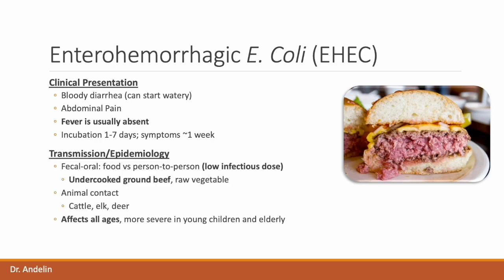It can be transmitted through the fecal-oral route, including through contaminated foods such as undercooked ground beef or raw vegetables. Just like Shigella, it has a low infectious dose, making it easy to spread from person to person. EHEC can also be spread through direct contact with animals such as cattle, elk, and deer. While enterohemorrhagic E. coli can affect all ages, it tends to be more severe in young children and in the elderly.